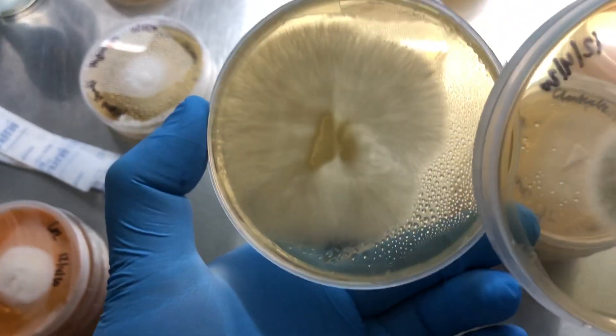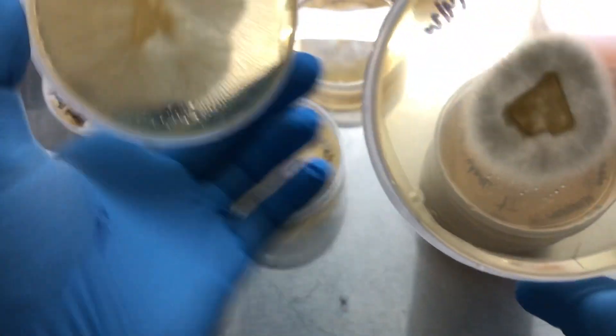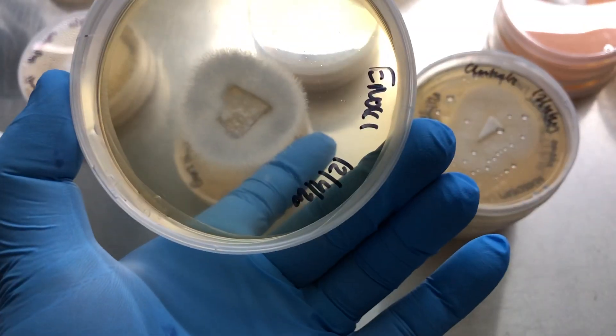It can be rhizomorphic, like this black pearl king oyster, or cottony, like these enoki mushrooms.